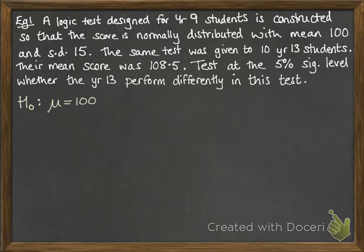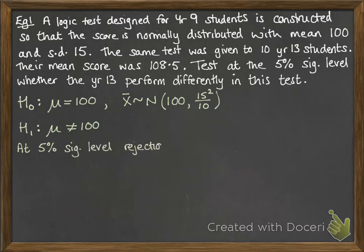So our null hypothesis is that the mean is 100, and x bar follows the normal distribution. Our alternative hypothesis is that it's different, the year 13 performed differently, and so it's not equal to 100.